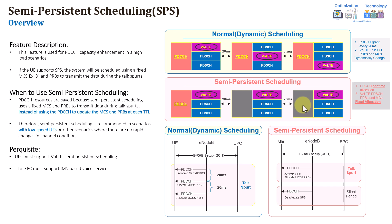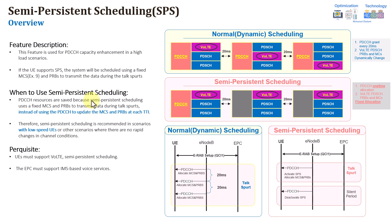This might cause problems, for example, in high-speed scenarios, whenever the user is moving with high speed and there is high variation in radio conditions. So this might cause a problem, especially if the user moves from a good radio condition area to a poor radio condition. This might increase silent calls or even drops, packet loss, or whatever. Also in scenarios where the user is moving from outdoor to indoor, those can also cause a problem.